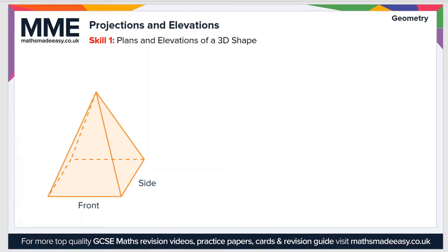There are three elevations you need to know about. The first is the plan view, which is the top-down elevation — looking at a shape from above, sometimes called a bird's-eye view. Next is the side elevation, which is looking at a shape from the side. Finally, the front elevation is looking at the shape from the front.